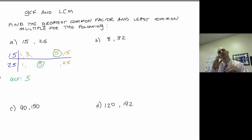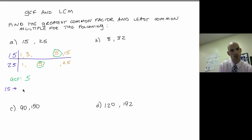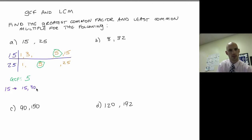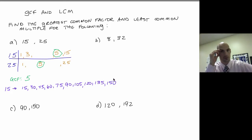Now let's talk about least common multiple. The least common multiple means I'm multiplying the number a bunch of times to get multiples, then find the smallest one in common. For 15: 15, 30, 45, 60, 75, 90, 105, 120, 135, 150 — I'm listing these out in my head.